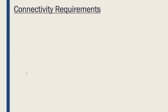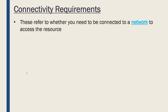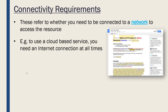Our third category of requirement is connectivity requirements. These refer to whether you need to be connected to a network to access your resource. A network is hardware and software which enables us to share resources. For cloud-based services, the whole purpose is you're accessing it remotely and it's not stored on your actual computer — if you've got no internet connection, you can't access the cloud. And if you're wanting to do something like real-time collaboration, you need to have an internet connection at all times. You can't suddenly drop off the internet and still expect to operate on a remote resource.